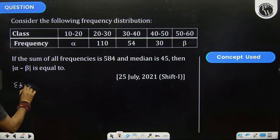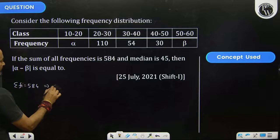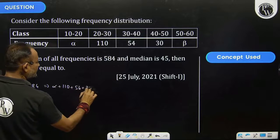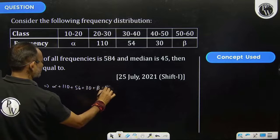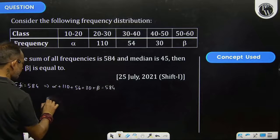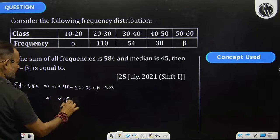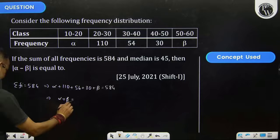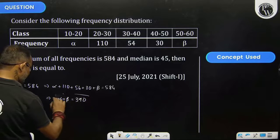That sigma fi is 584. That means alpha plus 110 plus 54 plus 30 plus beta is 584, which gives us alpha plus beta is 390. This is equation 1.